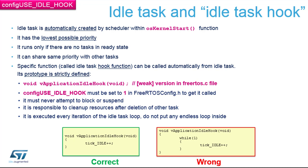You can see an example of a good idle hook implementation: we only increment a variable and exit. The case where we stay in a while loop in a blocking loop must not be present.